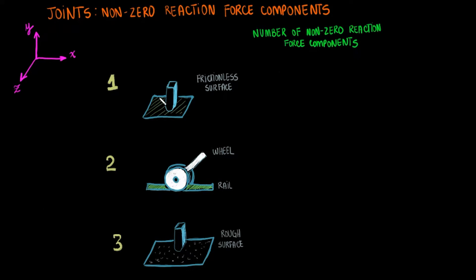When our junction is at a frictionless surface, it is safe to assume that the only non-zero force component is the one due to the surface contact. Then, the number of non-zero force components is really just one in this case.